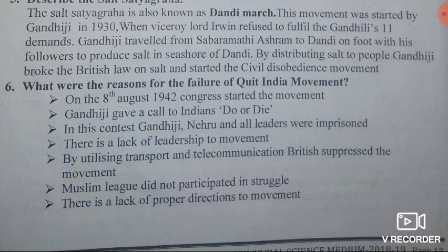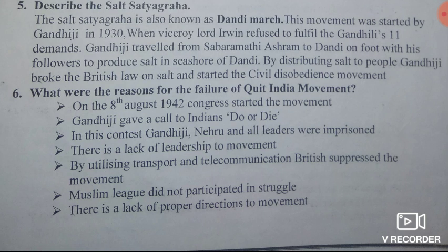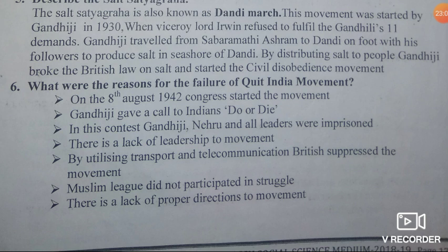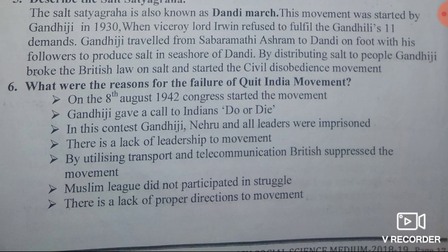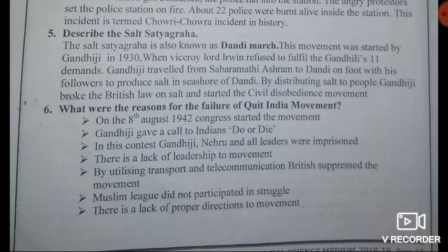Sixth question: what were the reasons for the failure of the Quit India movement? On August 8, 1942, Congress started the Quit India movement. Gandhiji gave a call to Indians — 'Do or Die.' Gandhiji, Nehru, and all leaders were then arrested. There was a lack of leadership for the movement. The British suppressed the movement by utilizing transport and telecommunication. The Muslim League did not participate in this struggle. There was also a lack of proper direction for the movement.